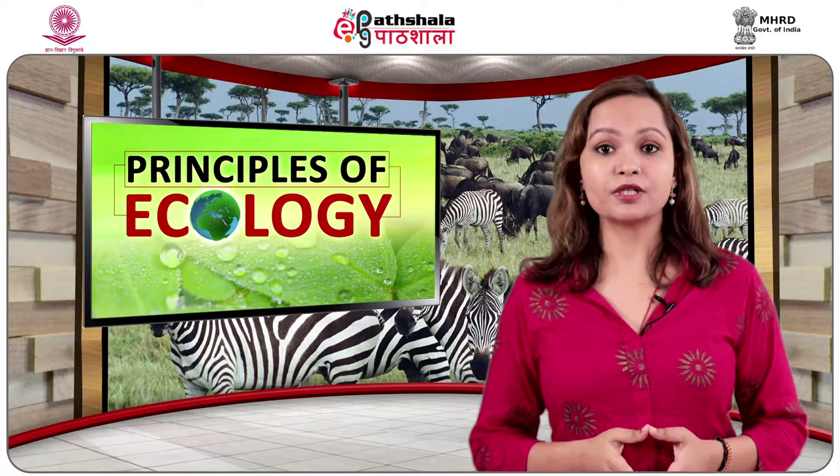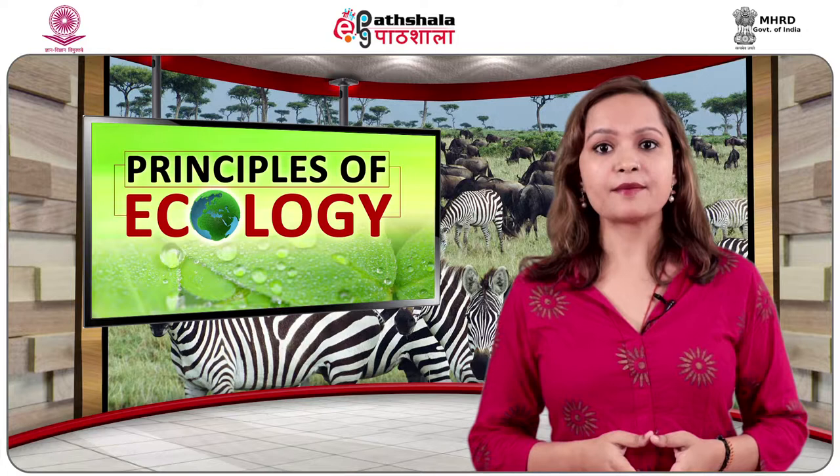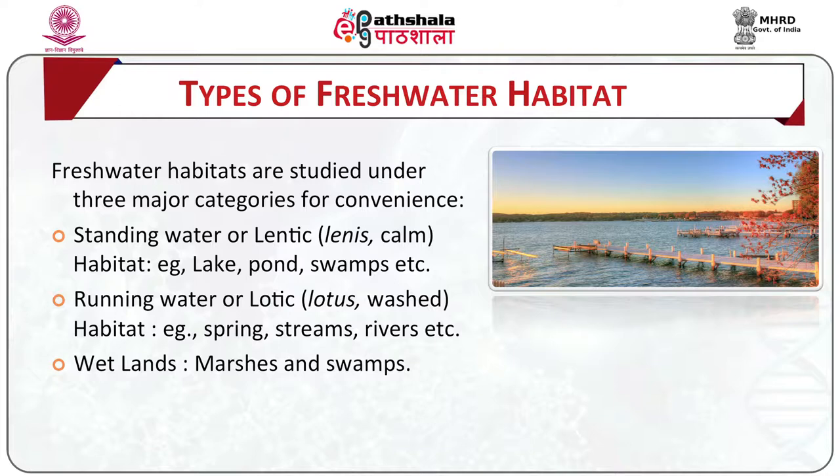The word stream is used to indicate any mass of water with unidirectional flow — mountain brooks, spring brooks, creeks and rivers. Types of freshwater habitat: freshwater habitats are studied under three major categories. Standing water, also called lentic (lentic means calm) — habitats which are calm in nature, e.g., lakes, ponds, swamps. Lotic (meaning washed) — habitats like springs, streams and rivers. Wetlands includes marshes and swamps.